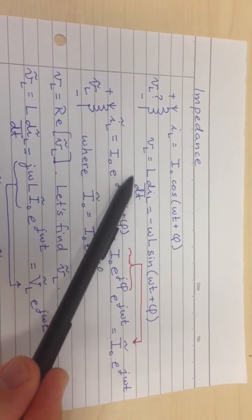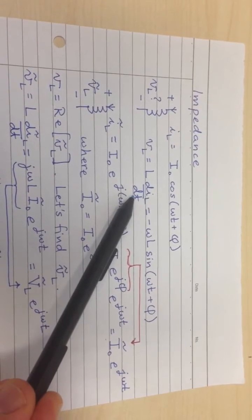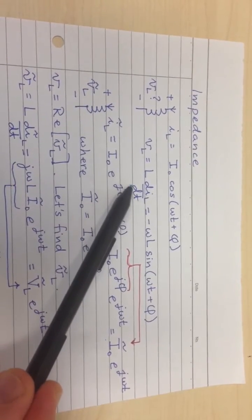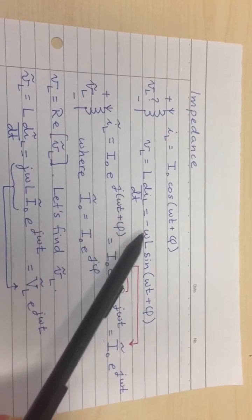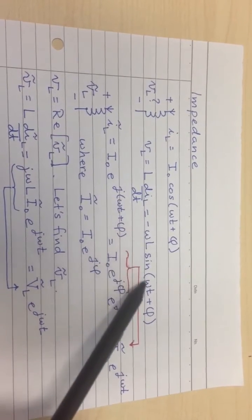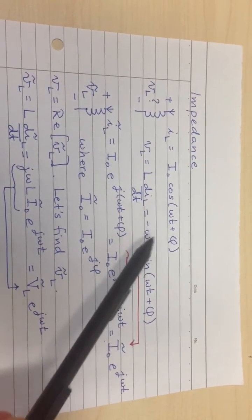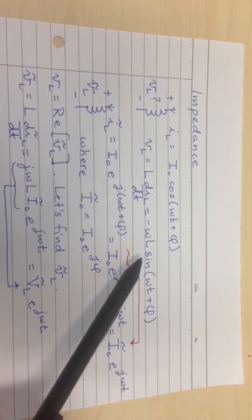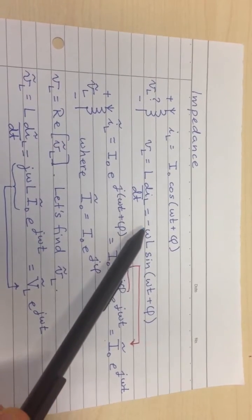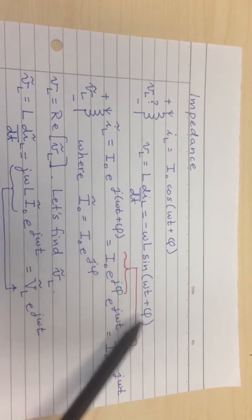So of course you can find that using the constitutive relation of an inductor, V equals L dI/dt, and take the derivative. You get an omega out in front from the chain rule there, and the cosine becomes a minus sign, and you get minus omega L I0 sine omega t plus phi.